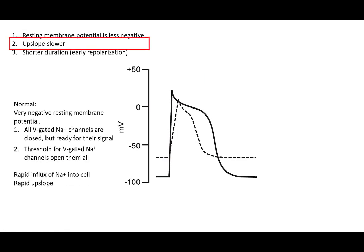Now the second one is this upslope portion is slower. We'll first start off in a normal situation. We normally have a really negative resting membrane potential. Then all the voltage gated channels for sodium in this case is going to be closed, ready for their signal. Then the threshold is reached and we shoot up and we have a nice quick and rapid depolarization.